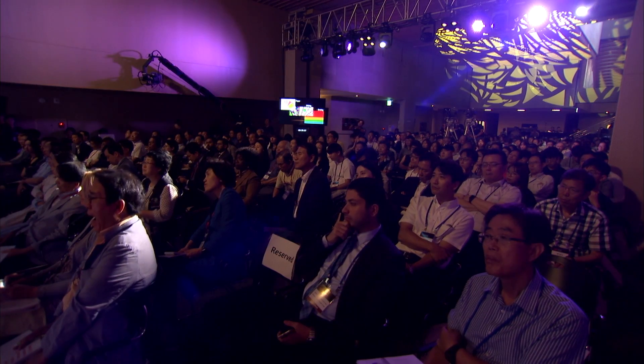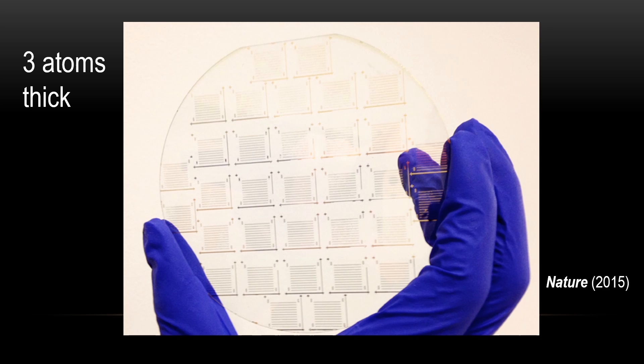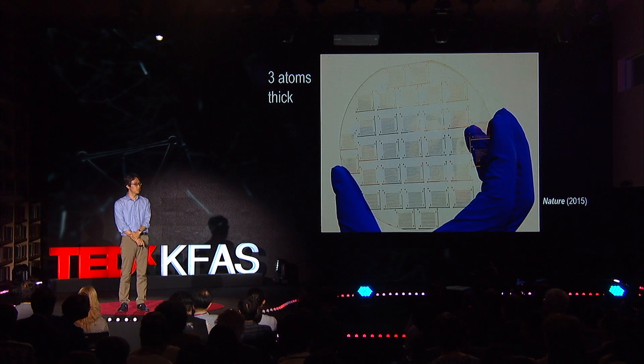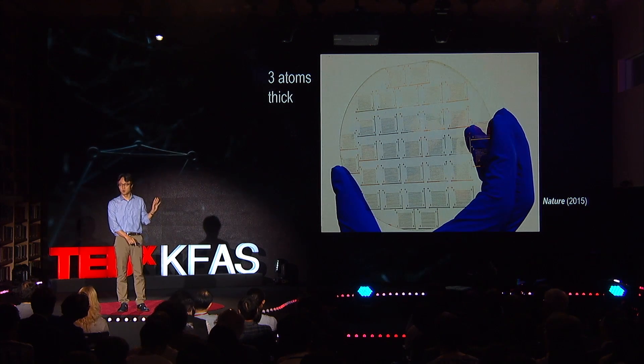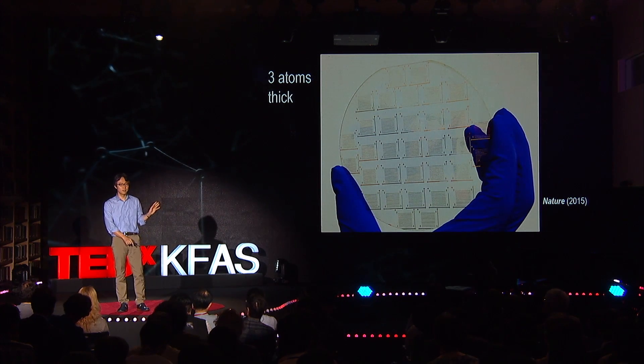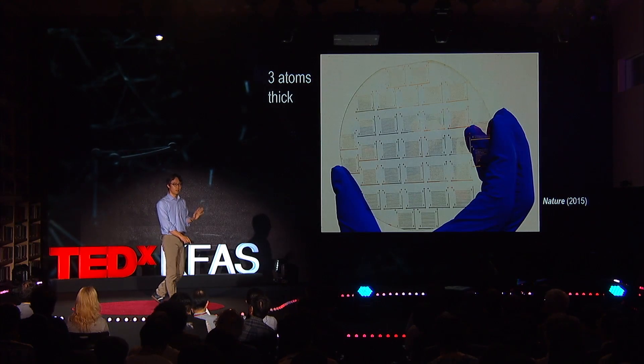Let me show you some of the results that we have developed in the past few years. This is a photo of a wafer or glass substrate. On the surface of that, we actually have a three-atom-thick semiconductor. It's a film — it's so transparent you cannot see it. But believe me, there is a semiconductor on it. It's only three atoms thick, and it's everywhere, and you can make devices out of it. On this wafer, we have thousands of transistors made with three-atom-thick semiconductor.